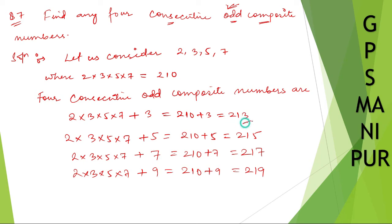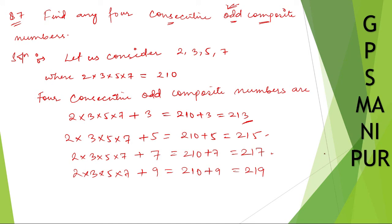Now let us check whether they are composite. Two hundred thirteen can be divided by three — so it is composite. Two hundred fifteen can be divided by five — composite. Two hundred seventeen can be divided by seven — so it is not prime, it is composite. Two hundred nineteen can also be divided by three, or even by nine, so it has more factors than one and itself — it is composite.